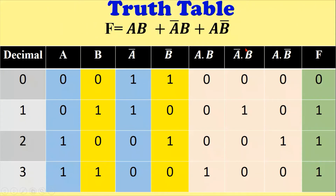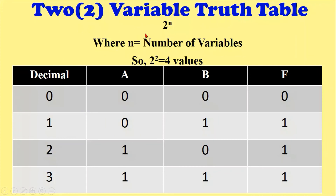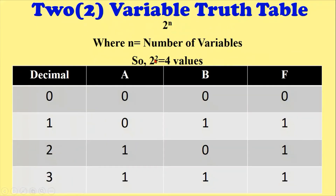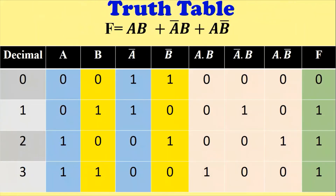Now a question is given: F equals AB plus A-bar B plus A B-bar. You have to draw the truth table for this Boolean function. First, draw the decimal column starting from zero to three, because we have two variables. By the formula two to the power two, we get four values. Fill in the combinations: A equals zero B equals zero for zero; A equals zero B equals one for one; A equals one B equals zero for two; A equals one B equals one for three.